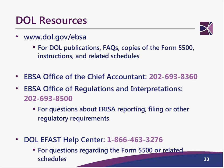Polling question two: which of the following are ways you can contact the DOL? A: the website at DOL.gov; B: call the Office of Chief Accountant at 202-693-8360; C: Office of Regulation and Interpretation at 202-693-8500; or D: DOL eFAST Help Center at 866-463-3276. The answer is E — all of the above.